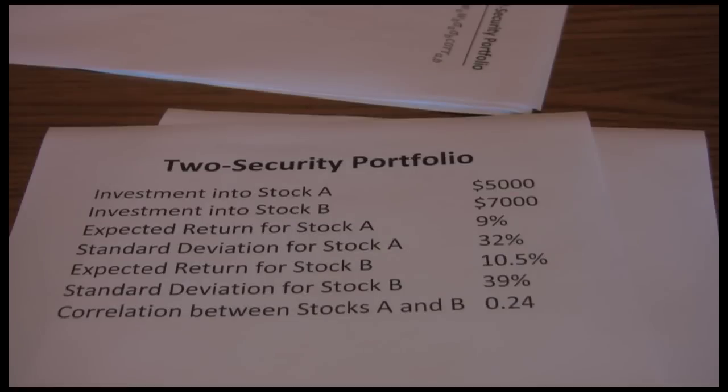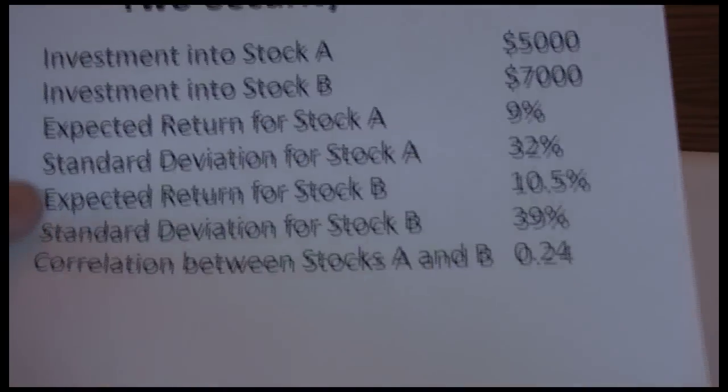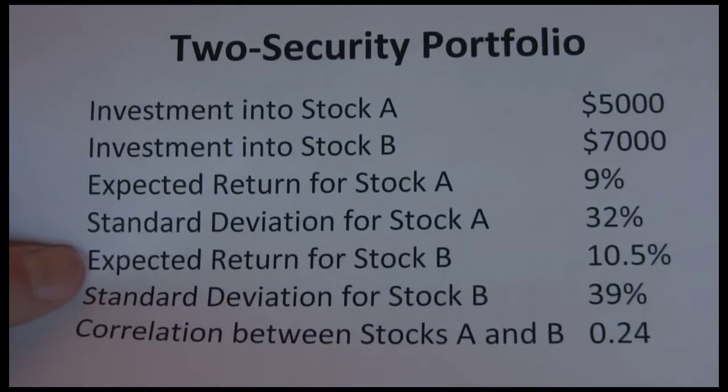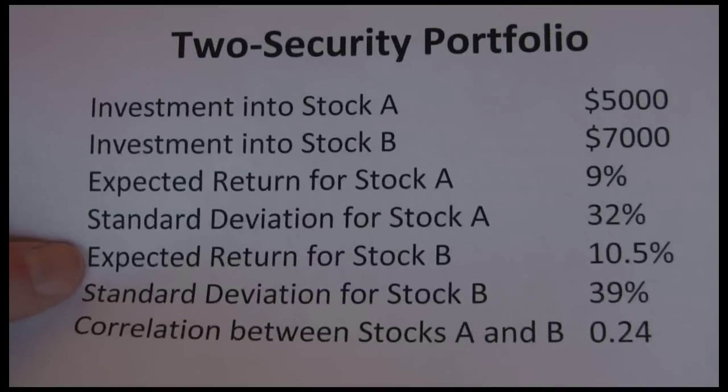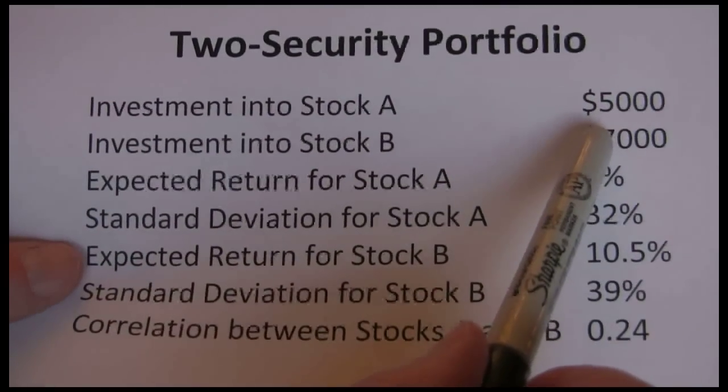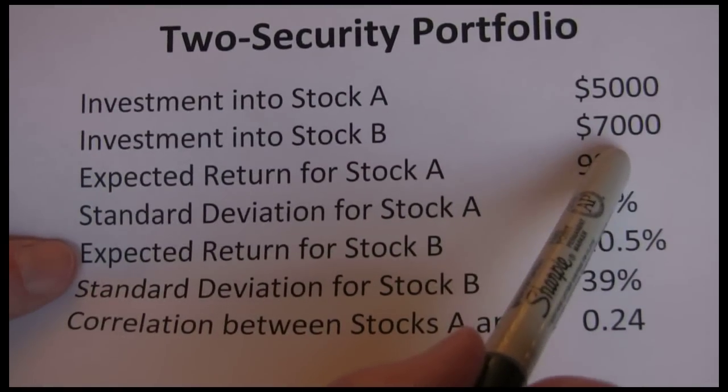We're going to walk through a two security portfolio. I'm going to do this in two parts. The first part is going to calculate the expected return and go through the problem. And the second part will do standard deviation. Here we have our problem. We've got two stocks, A and B. We've got $12,000 total that we're going to be investing, $5,000 into stock A, $7,000 into stock B.